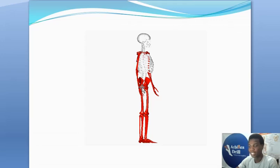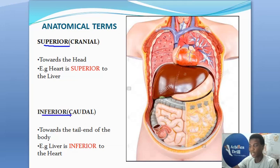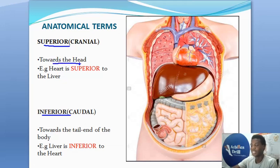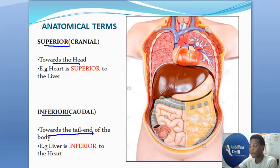Let's move on to some important terms I would take in pairs. The first would be superior and inferior — these pairs are opposites. When you say something is superior, it means towards the head of the body. And when you say something is inferior, it simply means it is towards the tail of the body.